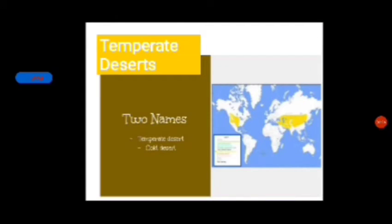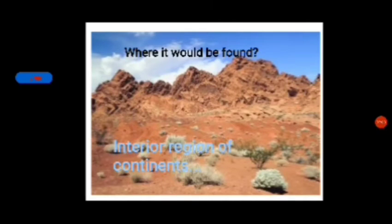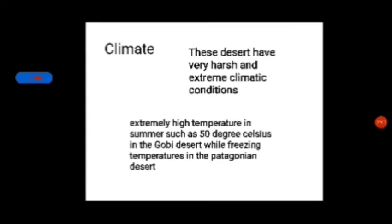Now, about the temperate deserts — also called cold deserts. A cold desert is a desert where temperatures usually are under zero degrees. Moisture in the air and wind is strong, meaning life is really difficult. The living things which live in these places are adapted. It would be found in the interior regions of continents. The climate of this region has very harsh and extreme climatic conditions — extremely high temperatures in summer such as 50 degrees Celsius in the Gobi Desert, while freezing temperatures in the Patagonian Desert.